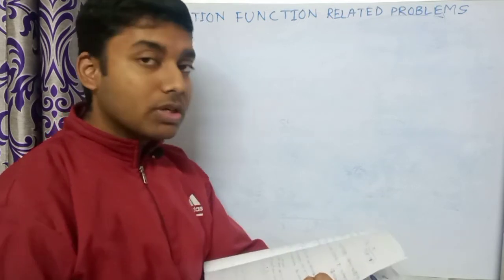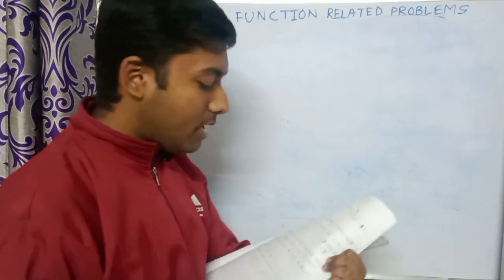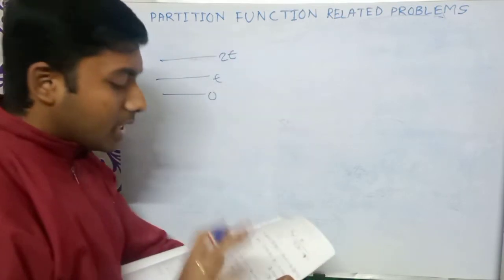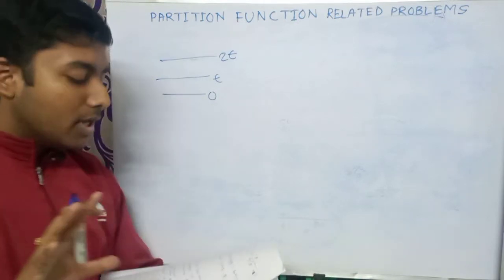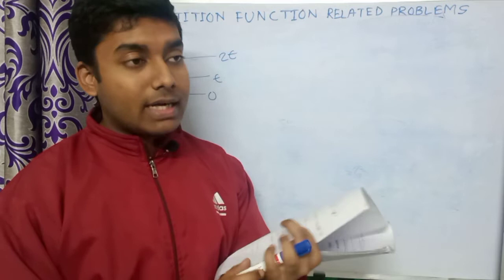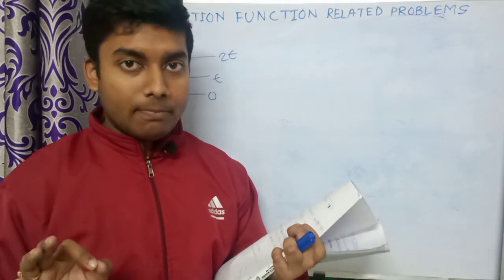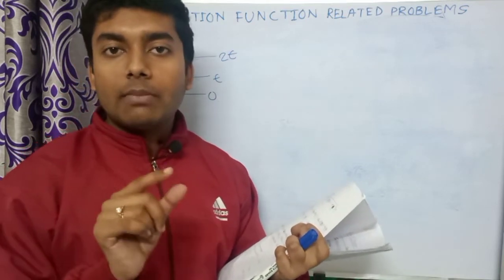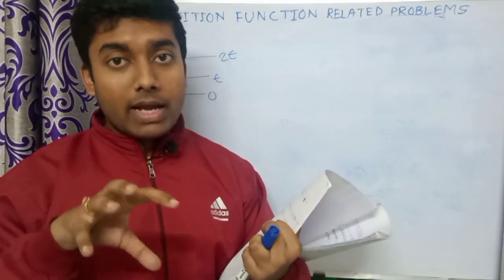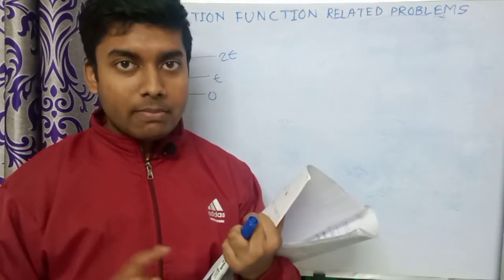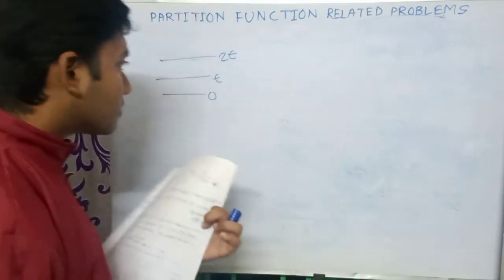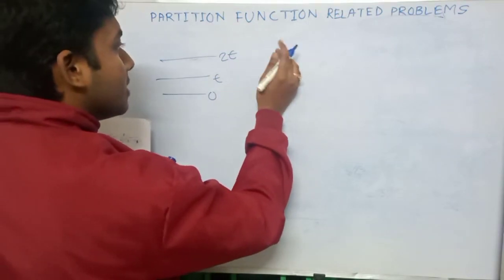There can be many distributions across the three energy levels — zero, ε, and 2ε — so there will be many types of arrangements. We have to find the energy of that distribution which has the maximum probability. The most probable state is the state where the number of microstates W is maximum — that is the distribution where W is maximum has the highest probability.